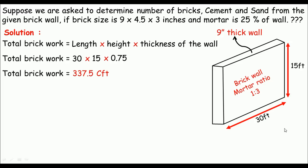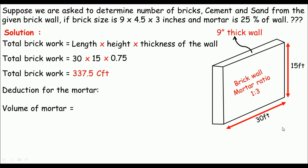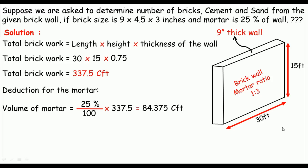This is the total brickwork, but we have to subtract the volume of mortar. The mortar is 25 percent, so volume of mortar = (25/100) × 337.5 cft = 84.375 cft.